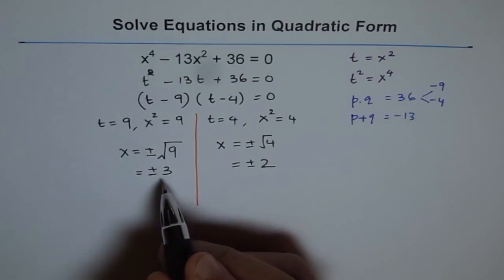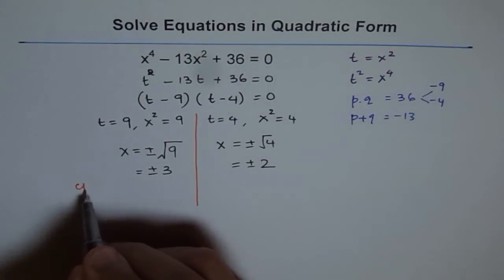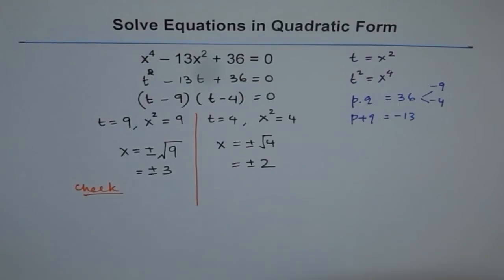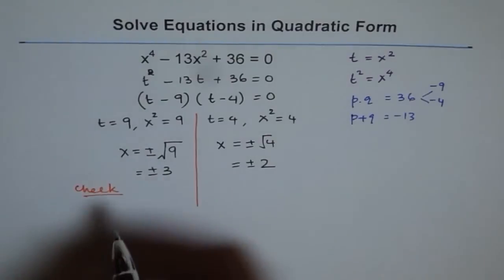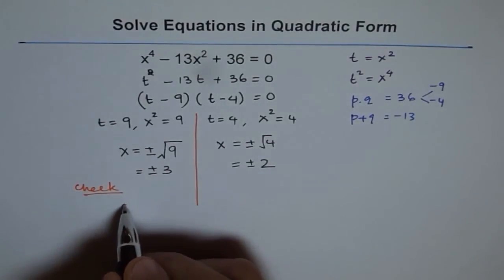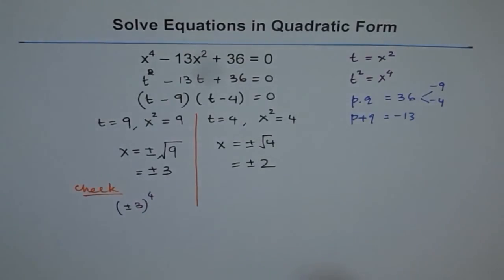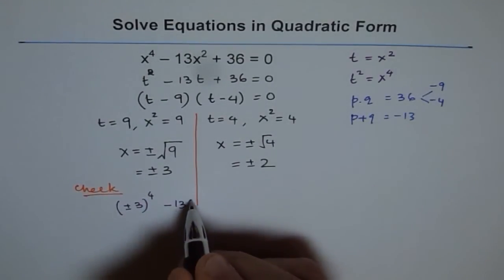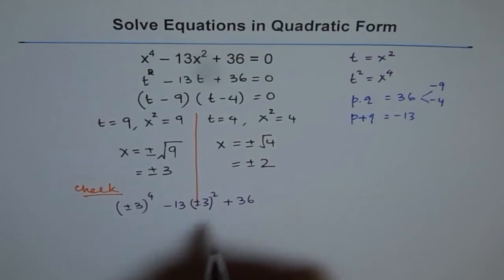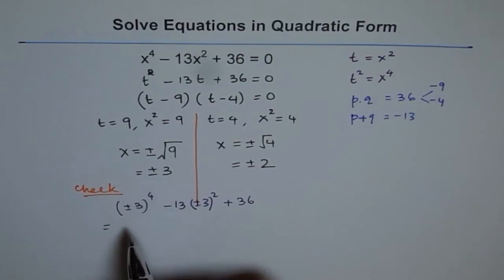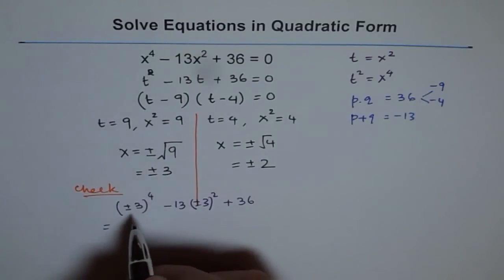So let's start checking it. So if I put plus 3 to the power of 4, let me write here. So I'll use plus and minus both because I know when I do to the power of 4 the result is going to be positive. Minus 13 times plus and minus 3 squared plus 36. Let's see how much it is. 3 to the power of 4: 3 times 3 is 9 and 9 times 9 is 81. So we get plus 81 here.